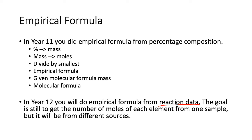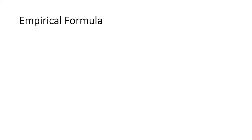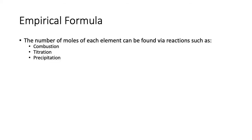The goal will still be to get the number of moles, and then you can work out the ratio of those elements. The number of moles of each element can be found from different types of reactions — combustion data, titration data, or precipitation data. I've seen all three in various exams. Today we're only going through combustion data, but you'll see titration and maybe precipitation data in the next couple of videos.